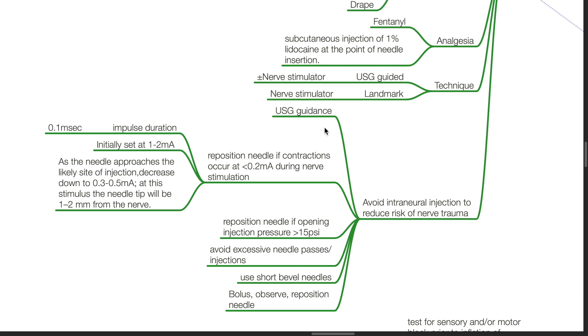Using ultrasound guidance, reposition the needle if contractions occur at less than 0.2 milliamps during nerve stimulation. Impulse duration should be 0.1 millisecond. Set at 1 to 2 milliamps initially. As the needle approaches the likely site of injection, decrease down to 0.3 to 0.5 milliamps.